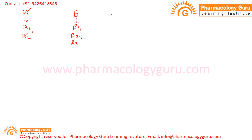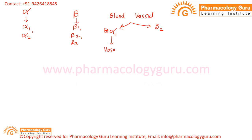Our organ of interest is the blood vessel. The blood vessel has two receptors: alpha 1 and beta 2. Alpha 1 receptors are more predominant. When these receptors are activated by stimulating the sympathetic system, the activation of alpha 1 receptors causes vasoconstriction.